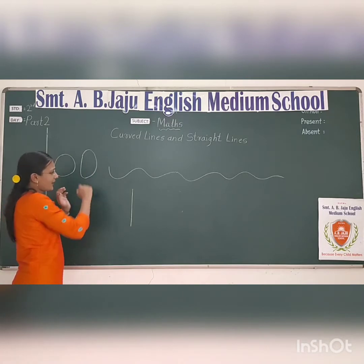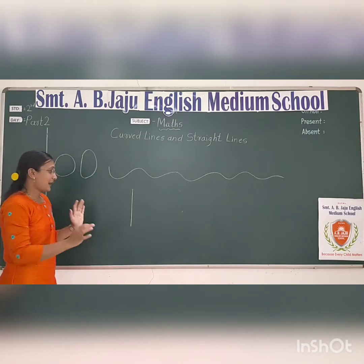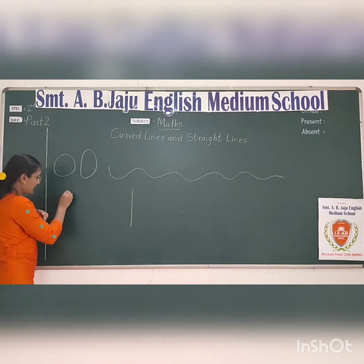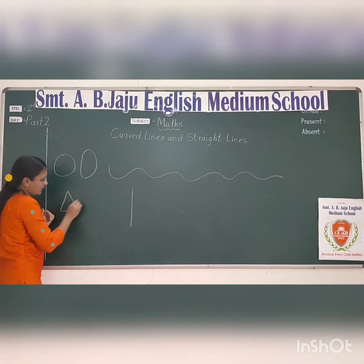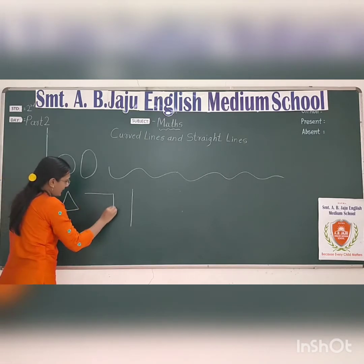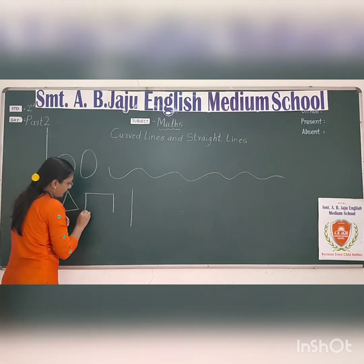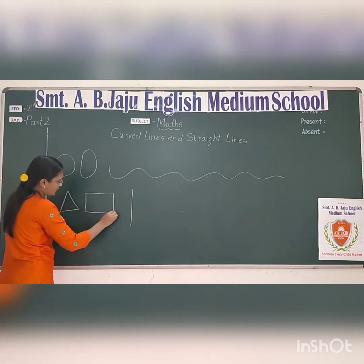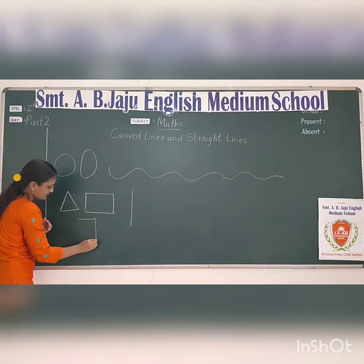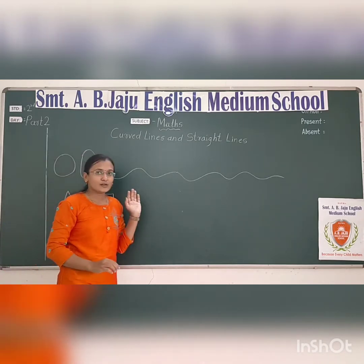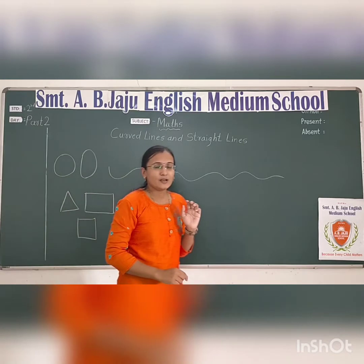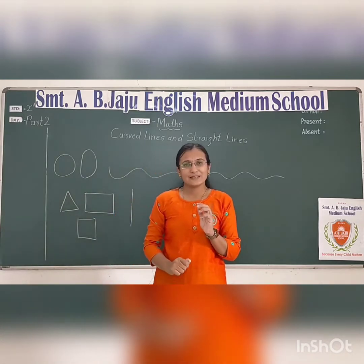This is the triangle, rectangle, and square — they are straight lines. Triangle, rectangle, and square are made of straight lines. And circle and oval are made of curve lines.